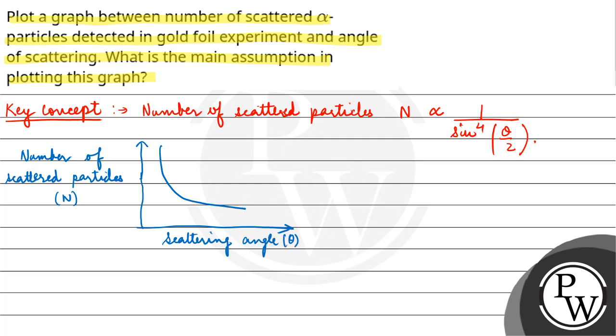That means number of scattered particles decreases at higher angles. The number of particles which get scattered at higher angles are less as compared to the number of particles which get scattered at low angles.